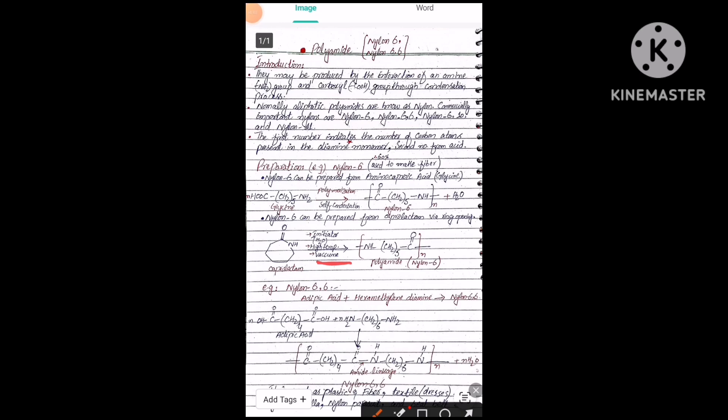When this initiator attacks on this bond, the carbon-nitrogen bond, this bond will break between the carbonyl carbon and amide linkage NH, and this ring will open to form a linear structure and form a polyamide named nylon 6. So there are two reactions through which we can prepare nylon 6.